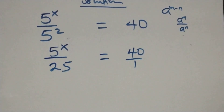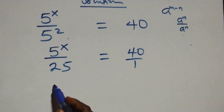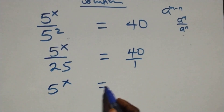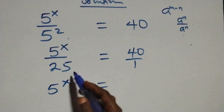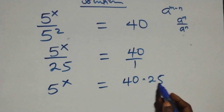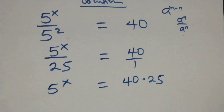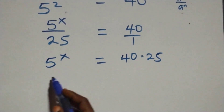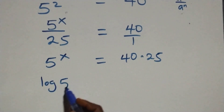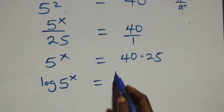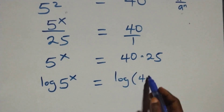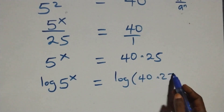We cross multiply: five raised to power x times one, which is five raised to power x, equals forty times twenty-five. Then we take the log on both sides, giving us log of five raised to power x equals log of forty times twenty-five.